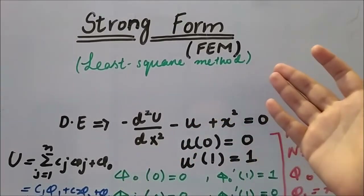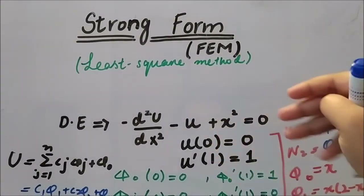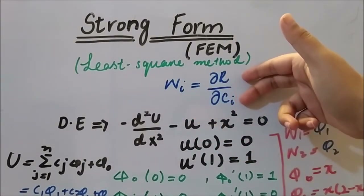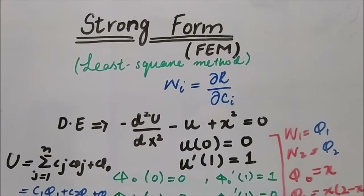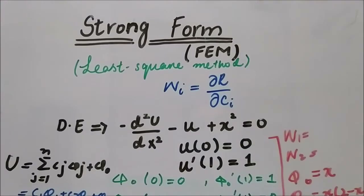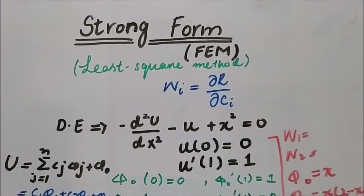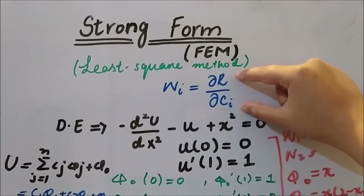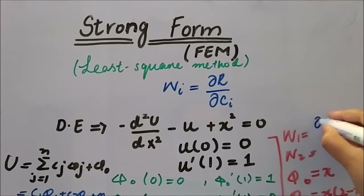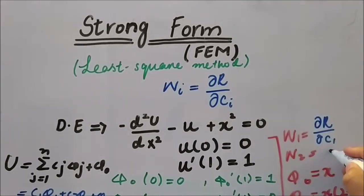Here in the Least Square Method, the main assumption is about the weight function. Every weight function is the partial derivative of the residual with respect to the constant term in the residual. It depends on the type and number of nodes we have. The conditions on the shape functions are the same as before — the difference is only in how we choose the weight function. So w1 equals the partial derivative of the residual with respect to c1, and w2 equals the partial derivative of R with respect to c2.